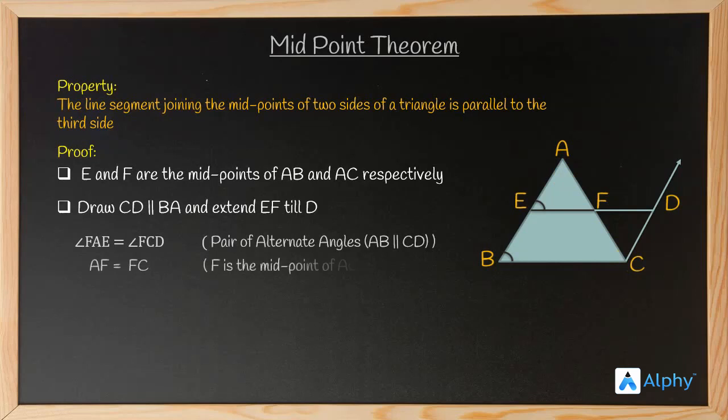Next, AF is equal to FC because as we already know F is the midpoint of AC. And the last, angle AFE will be equal to angle CFD. That means this angle will be equal to this angle because they form vertically opposite angles.